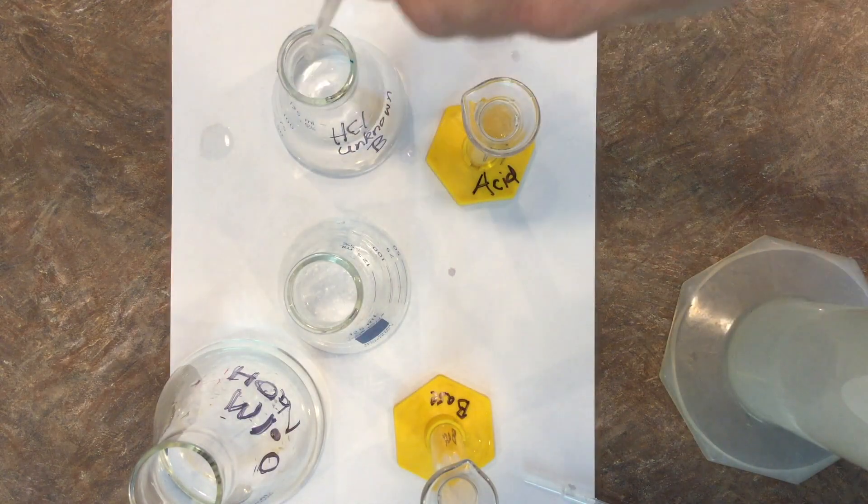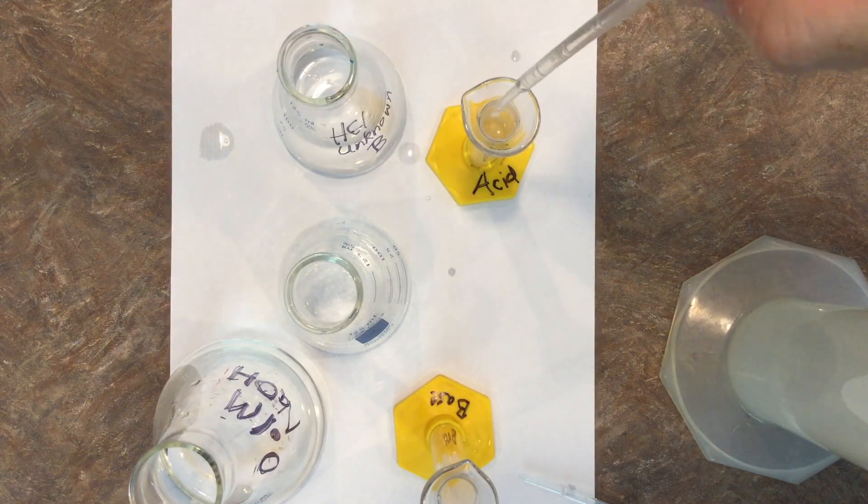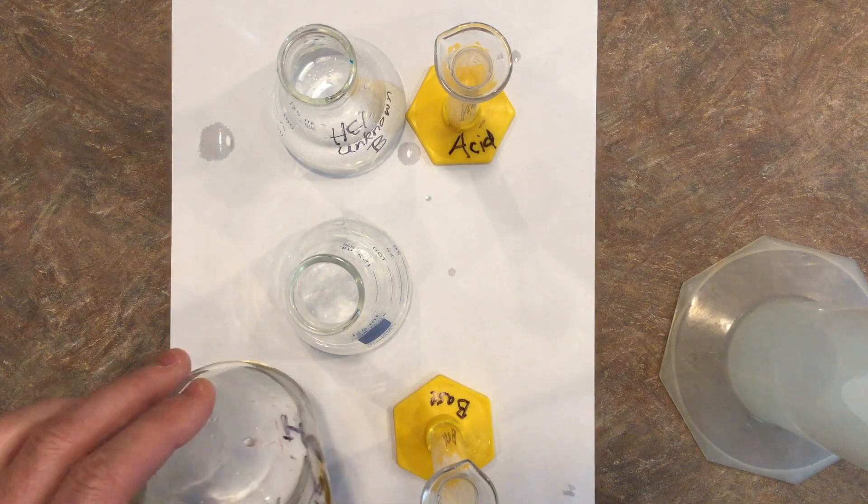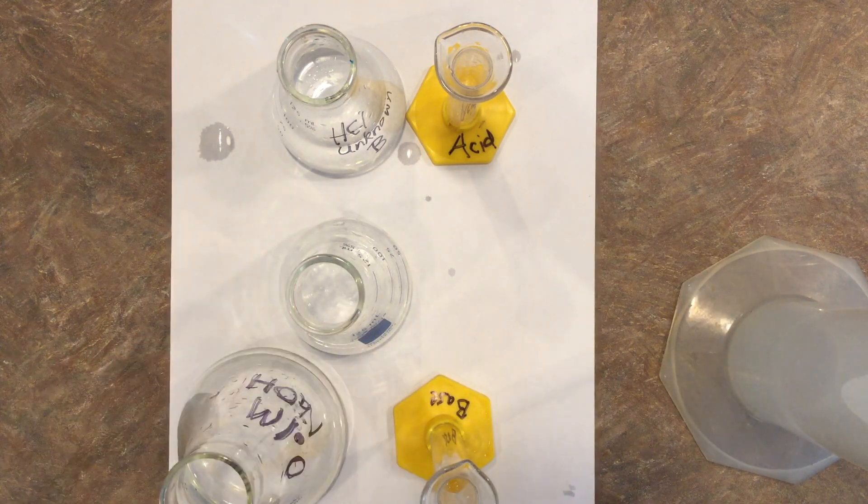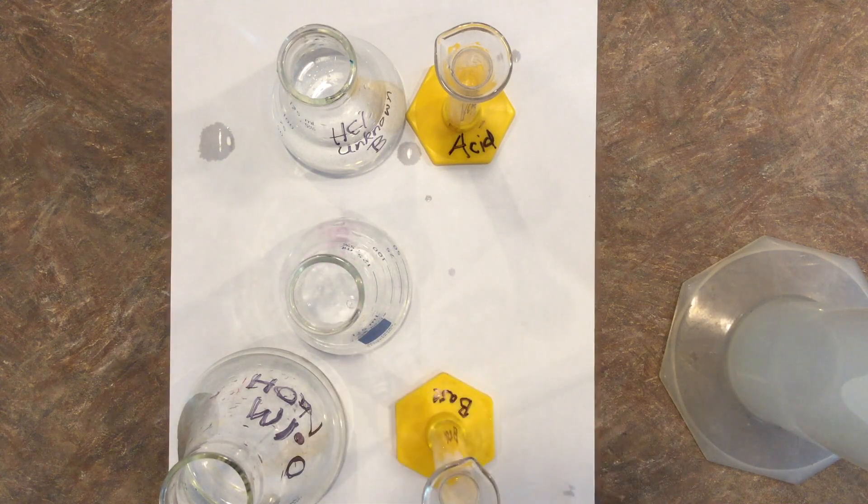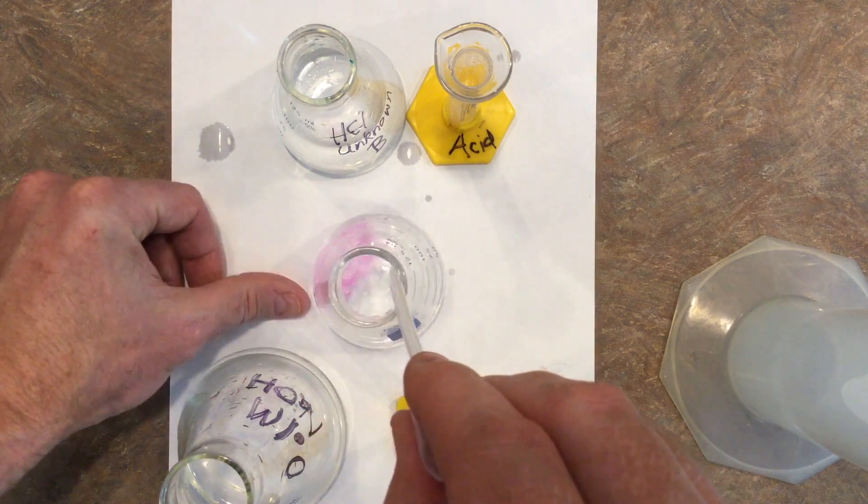And now on to unknown B. We'll start by measuring out 10 milliliters and put it into the empty Erlenmeyer flask. Then I'll get 10 milliliters of my 0.1 molar NaOH and put it in that graduated cylinder. Now I'll slowly start adding them and look for the color change. I don't want to go past that point.